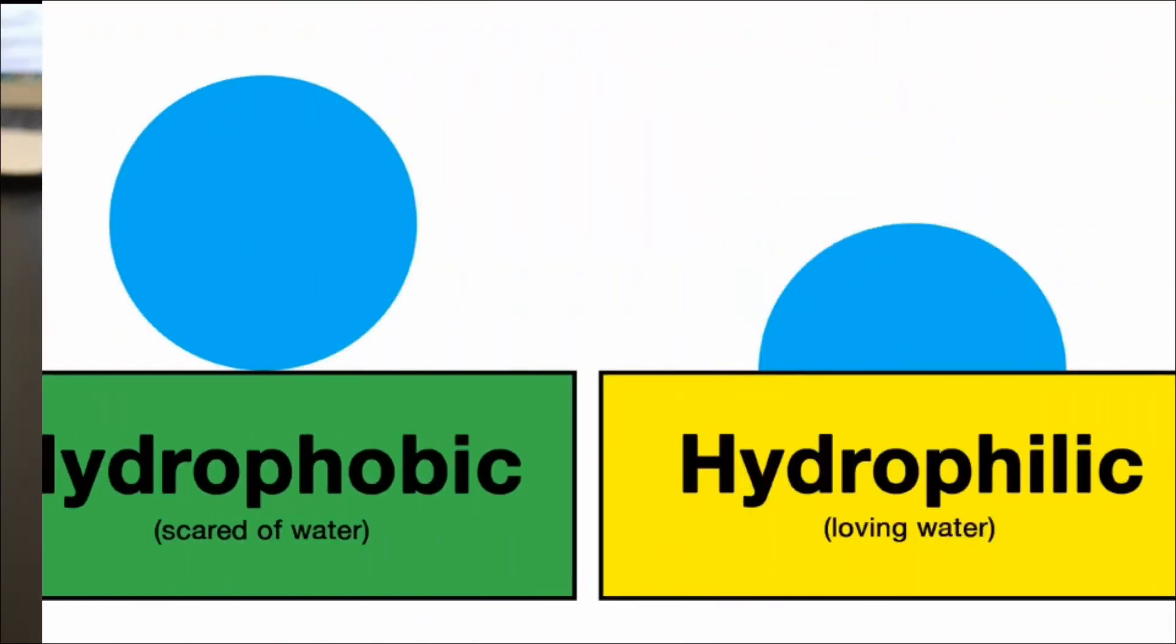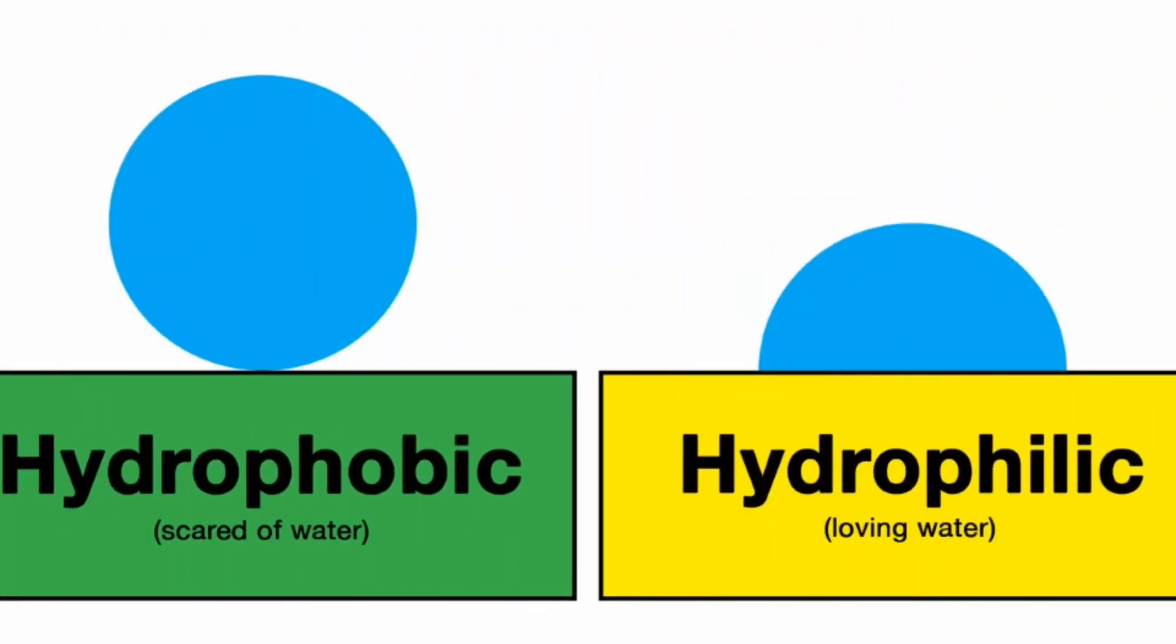This means that things like hexane are known as hydrophobic substances. Once again, when we look at the word, it appears to mean afraid of water, as phobic means fear.